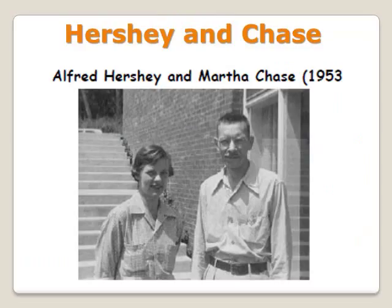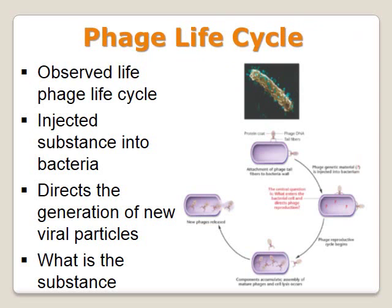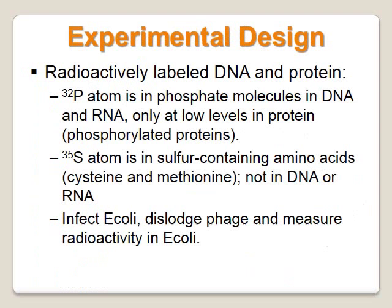People were still skeptical of the purity of the homogenate and weren't fully convinced until Alfred Hershey and Martha Chase in the early 1950s. These two were studying bacteriophage — viruses that infect bacteria — and they were studying the life cycle of the phage. They found that after infecting bacteria with a virus, virus particles would be generated within the bacteria, the bacteria would lyse, and viral particles would be released. They asked: what if we labeled the DNA with P32 and the protein with S35 to prove what the transforming principle is?